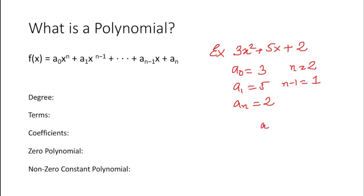Another example would be ax³ + bx² + cx + d. Here again it is of the same format. As you know, n is 3 and the first term a₀ is a, n minus 1 is 2, the second term a₁ is b, and so on and so forth. These are some examples of a polynomial.